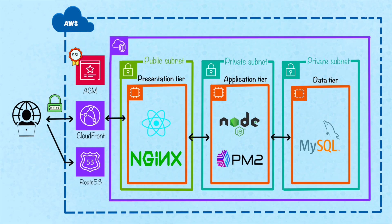Let's dive into the architecture of our project. We're building on our previous setup, again using EC2 instances within a VPC to host our application. But this time, we're significantly enhancing it with AWS CloudFront and AWS Certificate Manager. CloudFront is going to be a game changer for performance and scalability. By caching static content at edge locations worldwide, it drastically reduces load times for users and takes the pressure off our origin server.